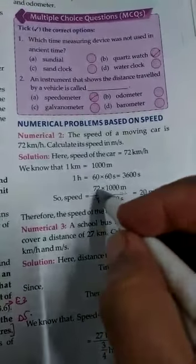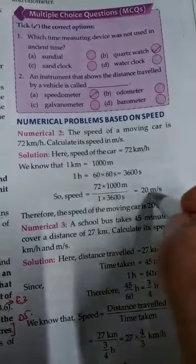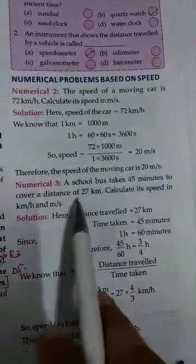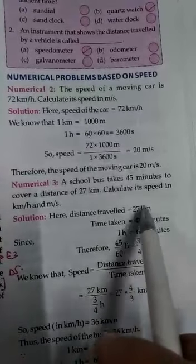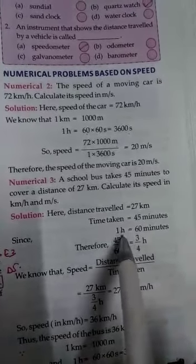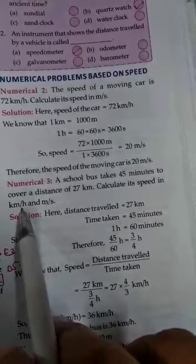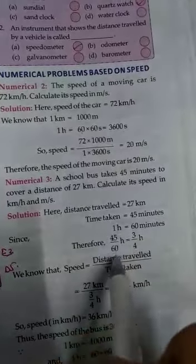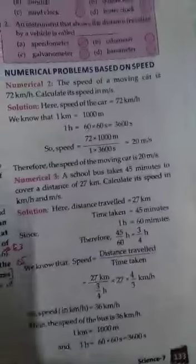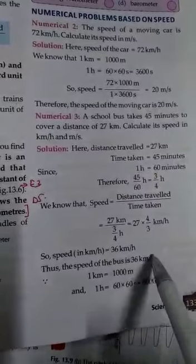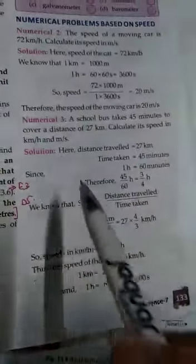Yahan aapka speed ka formula laga ke, distance upon time, ya aapka answer aa gaya. Isi tarah ki se, school bus takes 45 minutes to cover a distance of 27 km. Calculate its speed in km per hour and meter per second. Distance travel hai 27 km, time hai 45 minutes. Aap 45 minutes ko kya karoge? 45 minutes ka matlab ki agar hum yahan kilometer humein diya rakha hai aur yahan minute diya rakha hai, to iska matlab kilometer per hour hona chahiye. To hum pehle time ko, minutes ko, hours me change karenge. 1 hour is equal to 60 minutes hota hai, to 45 upon 60 ka matlab 3 upon 4 hours. Speed aap ki 27 km, time aap ka 3 upon 4 hours. Yahan aap ki isme speed calculate ho ke aajayegi. Aur jab aap kilometer per hour me nikalenge, to aap kya karenge: kilometer ko meter me change karenge, aur hours ko second me change karenge, kyunki humein answer kis me nikalna hai - meter per second me.